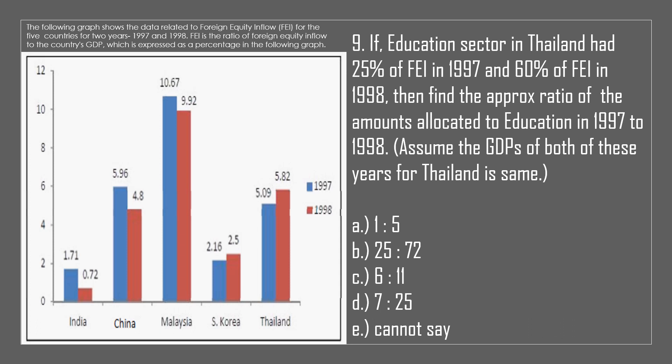Question 9. If the education sector in Thailand had 25% of FEI in 1997 and 60% of FEI in 1998, find the approximate ratio of the amounts allocated to education in 1997 to 1998. Assume the GDPs of both years for Thailand are the same. A. 1:5. B. 25:72. C. 6:11. D. 7:25. E. Cannot say. The answer is B, 25:72.